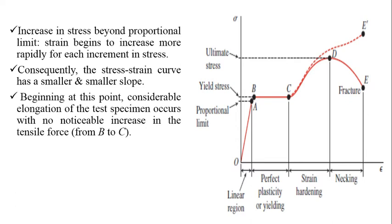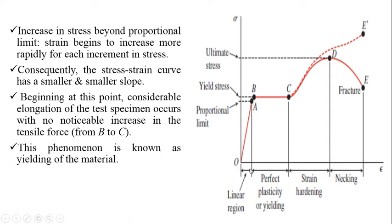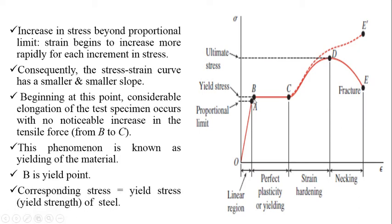Beginning at point B, considerable elongation of the test specimen occurs with no noticeable increase in tensile force — from B to C the stress is almost constant while the strain is increasing. This region is called perfect plasticity or yielding, whereas the initial region O to A is called the linear region. This phenomenon is known as yielding of the material. Point B is the yield point, and the corresponding stress is called the yield stress or yield strength of the steel.